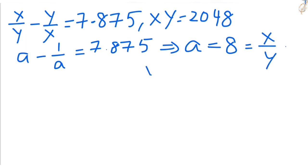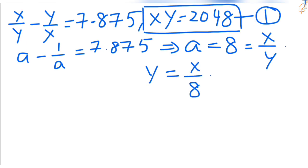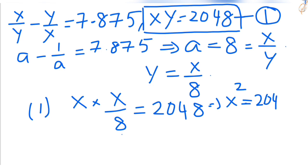From here, y equal to x by 8. xy equal to 2048 considered as equation 1. Substitute this y value in equation 1. So x times x by 8 equals 2048. x times x is x square, and when you send 8 to the opposite side it becomes multiplication. 2048 times 8 equals 16,384.